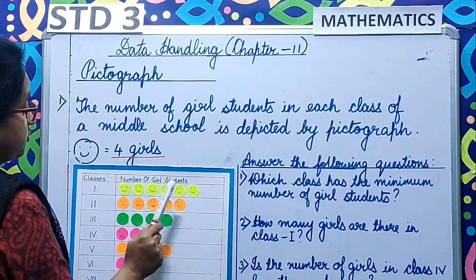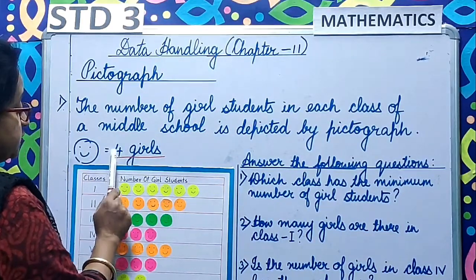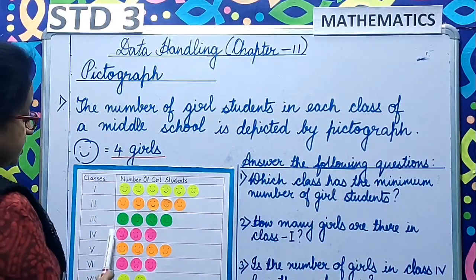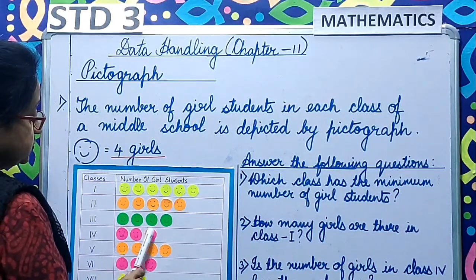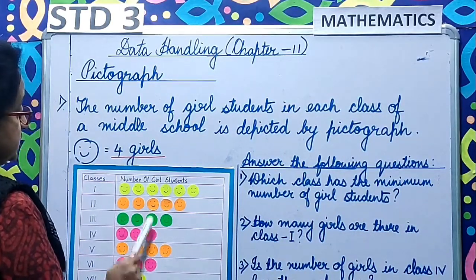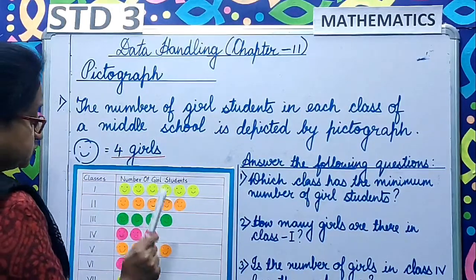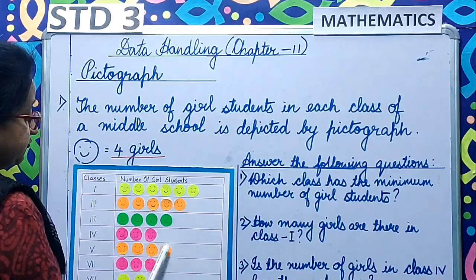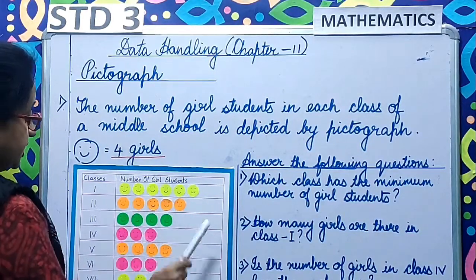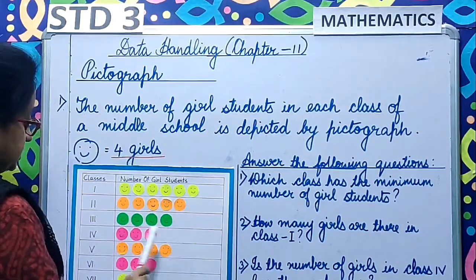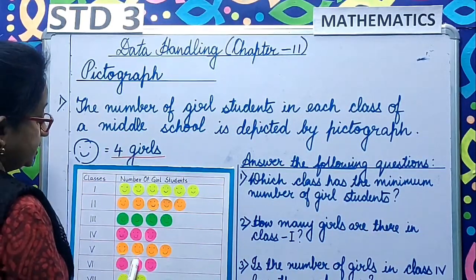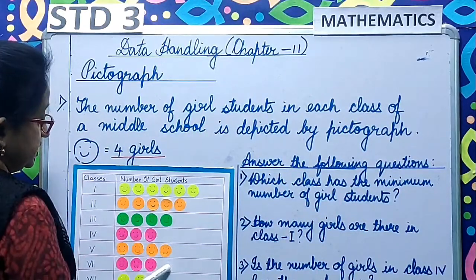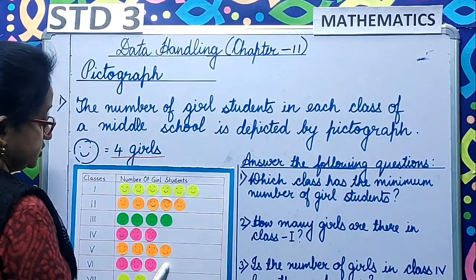Class 3 has 4 smileys: 4 into 4 gives 16 girl students. Class 4 has 3 smileys: 3 into 4 makes it 12. Class 5 has 4 smileys: 4 into 4 again gives 16. Class 6 has 3 smileys: 3 into 4 again makes it 12.